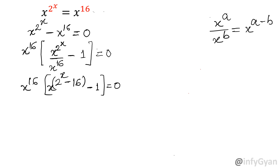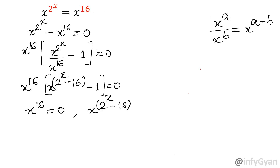Two brackets equal to 0 means either one bracket equals 0. So x power 16 can be 0, or the second factor x power 2 power x minus 16 minus 1 equals 0.